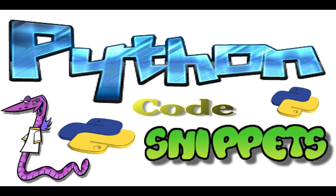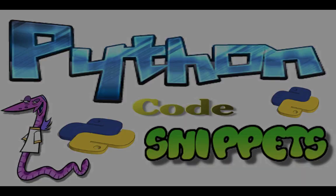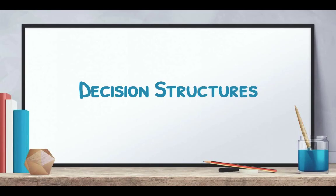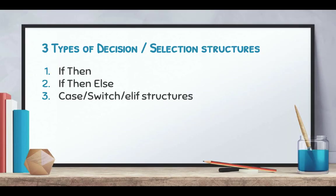Welcome to this Python code snippet. Today we'll be focusing on decision structures. In programming there are three major structures that we use: the first is the if-then statement, the second is the if-then-else, and the third is known as a case statement, switch, or elif in Python syntax.